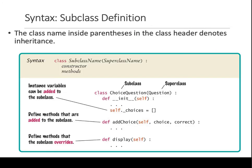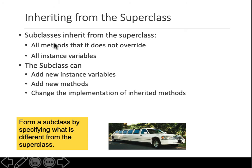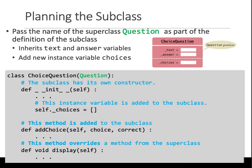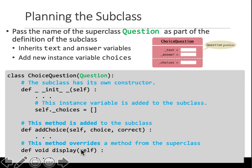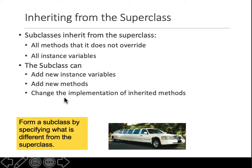Subclass inherits from the superclass. A subclass can add new methods and change the implementation of inherited methods. The display function — you're writing the same function in the subclass, but it does something else that the parent display function does not do. This is basically called overriding — the display method overrides the method display defined in the superclass.